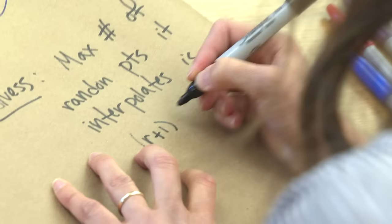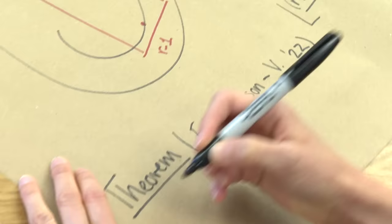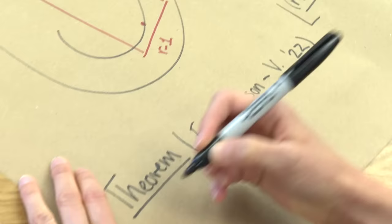So r plus 1 times d minus r minus 3 times G minus 1 all over r minus 1. This floor is the guess for the maximum number of points.